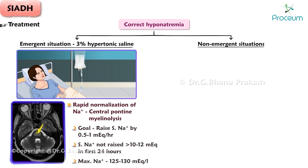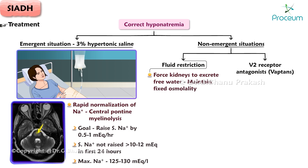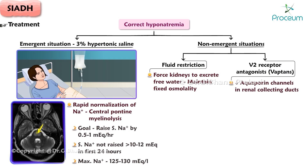In non-emergent situations, use fluid restriction and/or V2 receptor antagonists. Fluid restriction limits water intake, forcing the kidneys to excrete free water from plasma to maintain the fixed osmolality dictated by antidiuretic hormone secretion. V2 vasopressin receptor antagonists — the vaptans — reduce aquaporin channels in the renal collecting ducts, decreasing permeability to water and reducing the amount of water reabsorbed in the collecting duct.